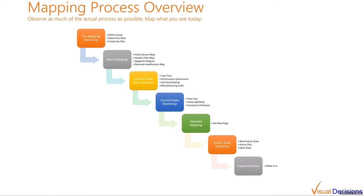The next step is basic mapping, where we create the fundamentals: the actual value stream map, quality filter map, spaghetti diagrams, etc. We outline initial ideas of the flow and where quality issues are happening. Once the basics are completed, we need to collect data about the current state. The traditional path is to get out to the floor, do gemba walks, talk to operators and supervisors to get takt time and performance information, or monitor the process and collect actuals for a while.